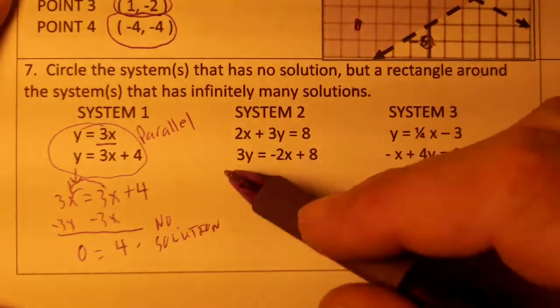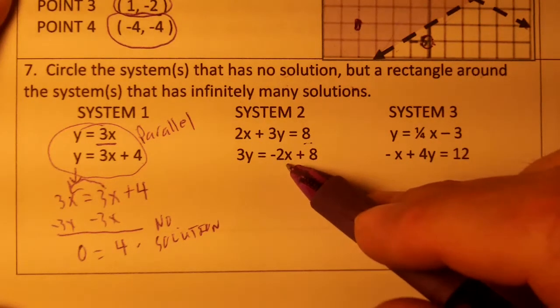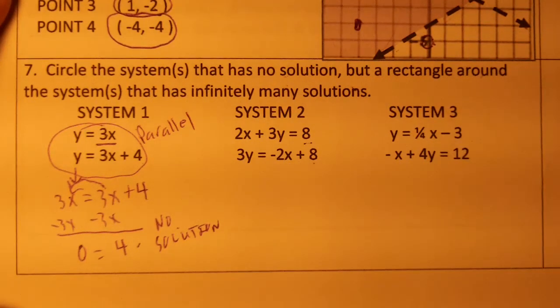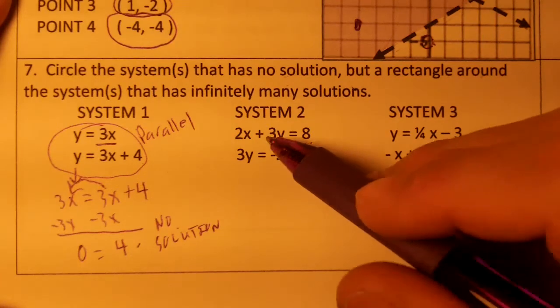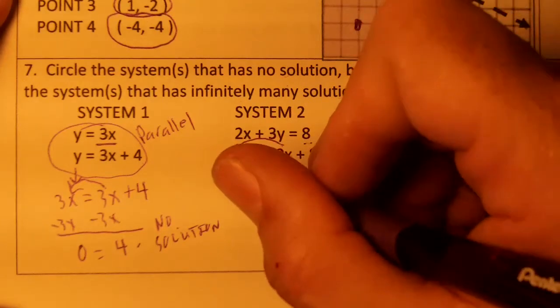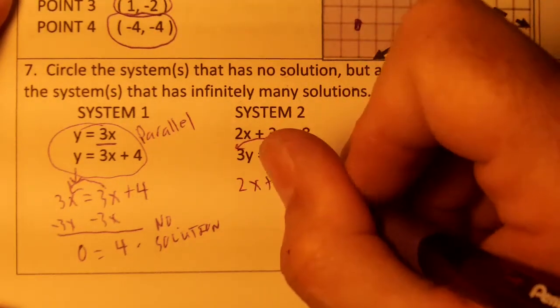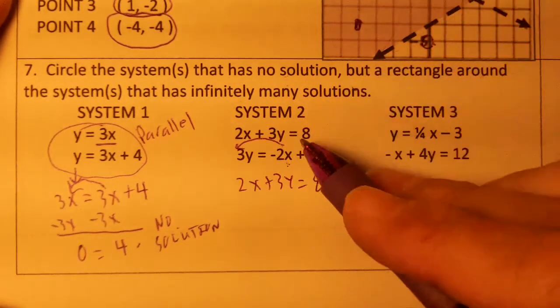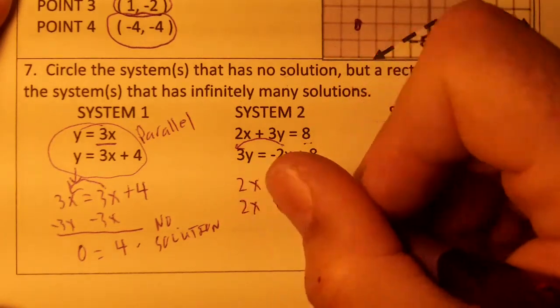Okay, on this one right here, 2x plus 3y equals 8. 3y equals negative 2x plus 8. Let's put this, this is in standard, let's put this one in standard. If we move the x across, we'll get 2x plus 3y equals 8. This one's 2x plus 3y equals 8.